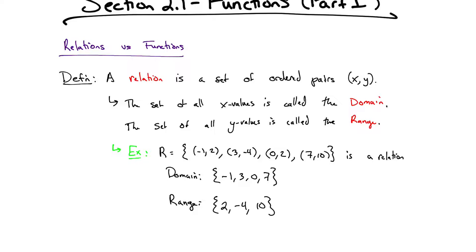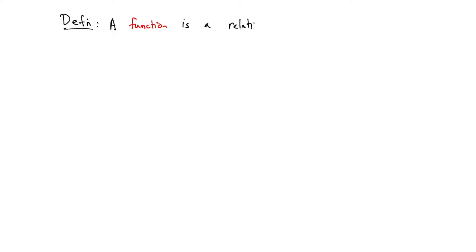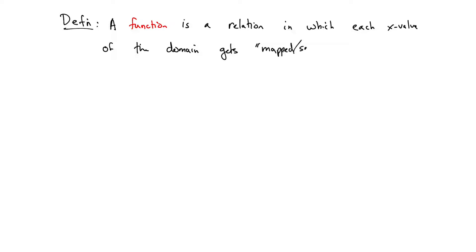Now, I don't want to get too bogged down with relations because we're going to be more interested in functions. So, what is a function? Definition: a function is a relation — a special type of relation — in which each x value of the domain gets mapped, or sent, to exactly one, and only one, y value. That's an added requirement: each x value can only be sent to one y value.